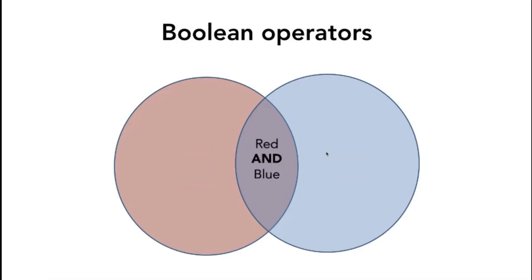The last Boolean operator is AND, and it gives a very concise result. Wherever you want to search for two topics together where both need to exist, use AND. Searching for 'red AND blue' gives results only from the overlap area. When we search for 'tuberculosis AND HIV,' we only get articles that talk about both tuberculosis and HIV. Pure HIV topics and pure tuberculosis topics will be excluded.